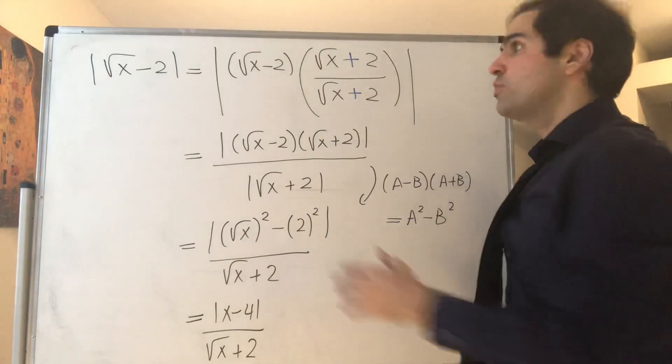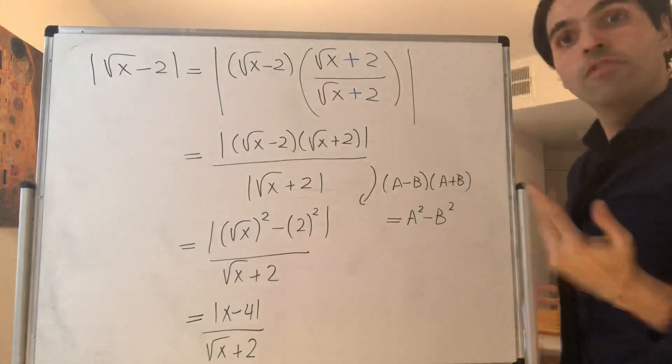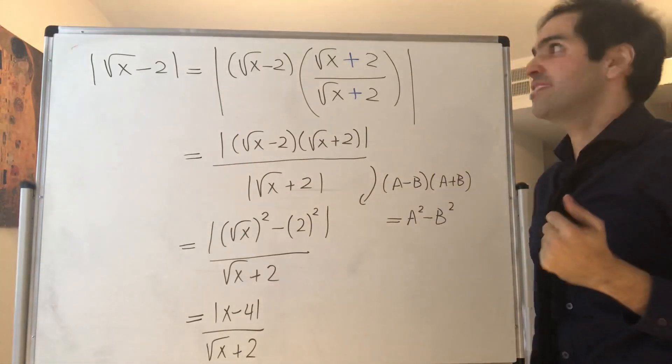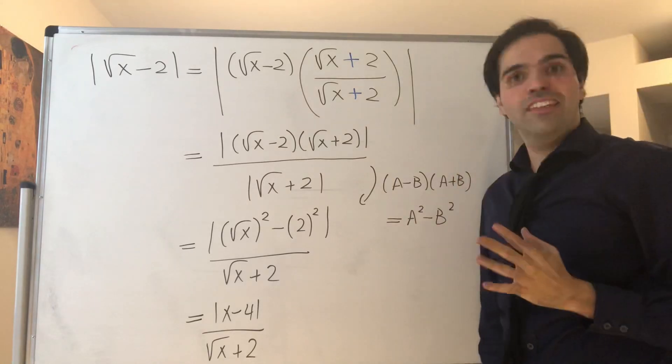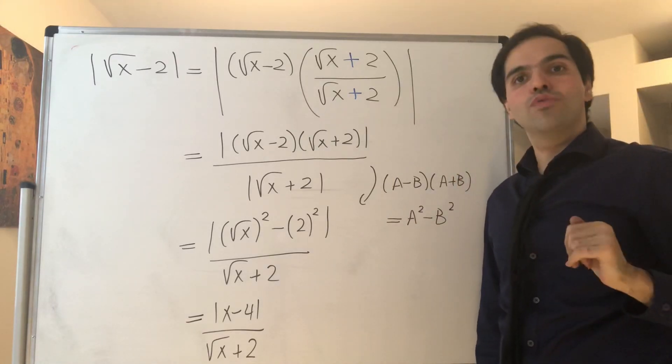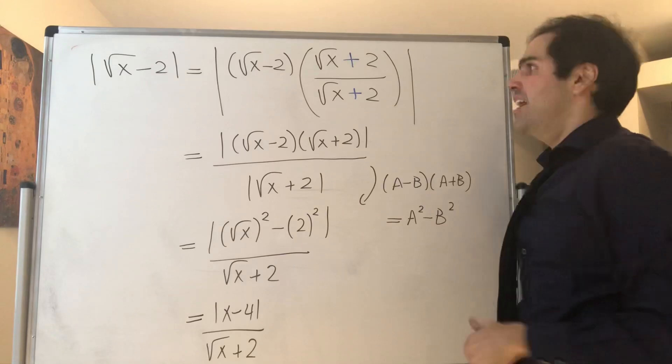Let's consider the difference between square root of x and 2, and remember we want to show this is less than epsilon. Now, let's use a neat little trick, which was also very useful for limits with square roots. Namely, let's multiply this quantity by the conjugate.